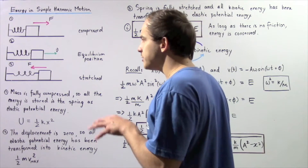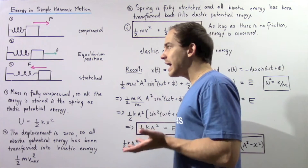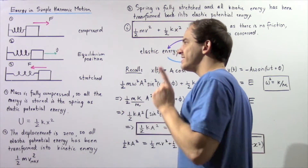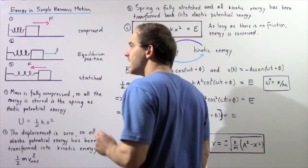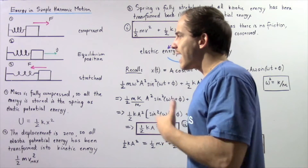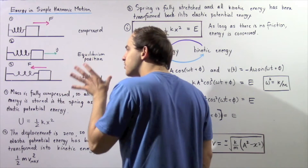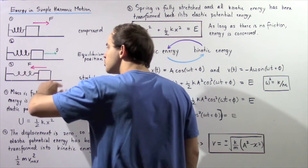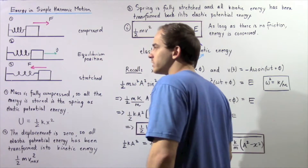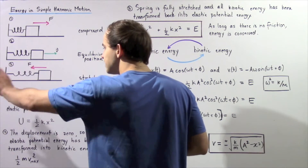Eventually the object will reach the equilibrium position where displacement is zero. Because displacement is zero, the force acting on the object due to the coil spring at equilibrium is also zero. The object will have its maximum velocity at this point. Eventually it reaches the fully stretched position, momentarily comes to rest, and the force acts in the negative direction along the x-axis, restoring the object back. The object continues to oscillate back and forth.